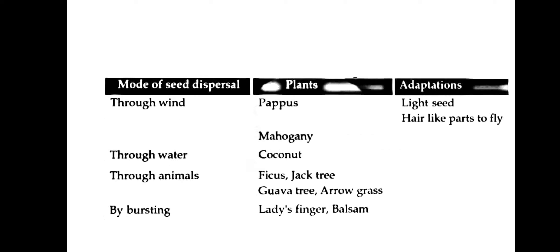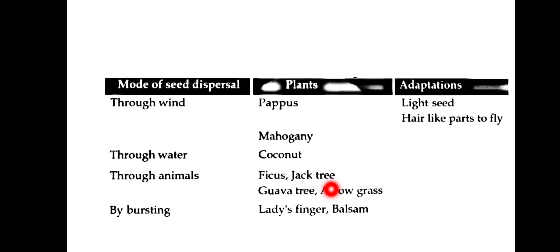Summary: Through wind — Papas, Mahogany. Through water — Coconut. Through animals — Ficus, Jack tree, Guava tree. By bursting — Lady's finger, Balsam.